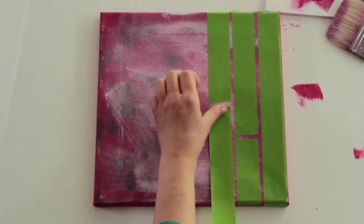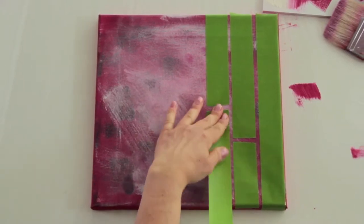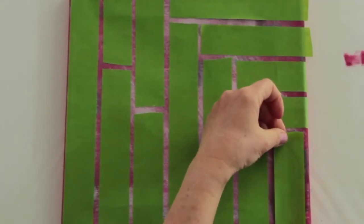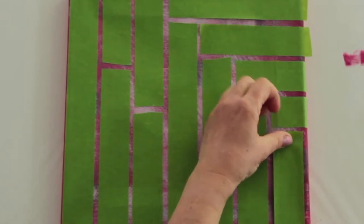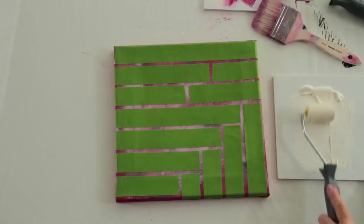Then do the masking. Mask the canvas frame in a brick pattern with crepe adhesive tape. Different patterns are created depending on the distances and width of the masking tape.